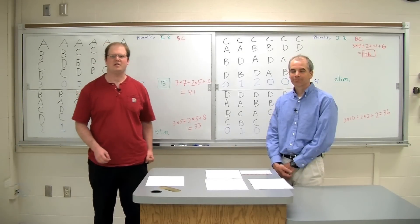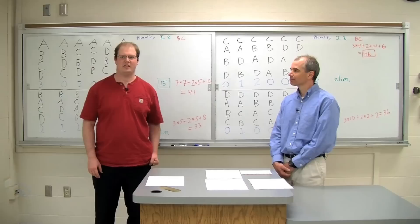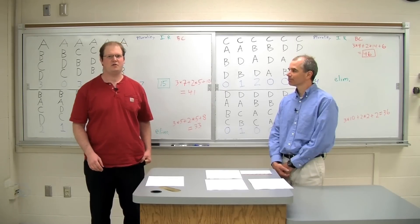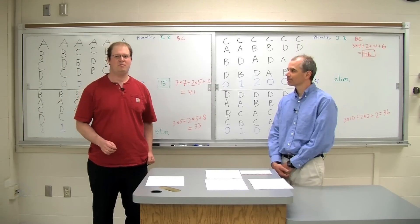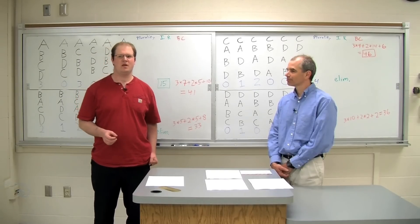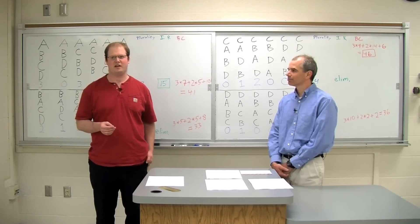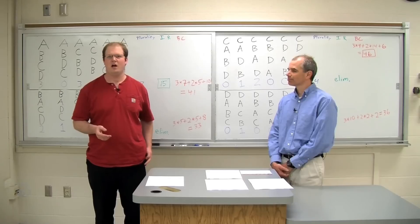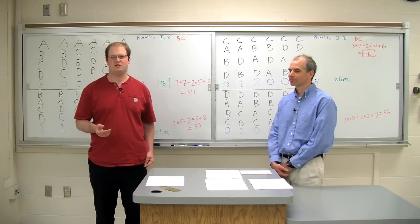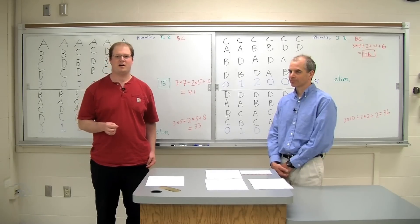Welcome back. The Borda count method really is different from what you're used to seeing, and it's a bit more complicated when deciding who wins. It really drives home the point that every vote matters in the way points are distributed. With this method, moderate candidates who appeal to larger audiences have a much better chance to win the election. This type of voting method is used for American college football when voting for the winner of the Heisman Trophy and also the Eurovision Song Contest.